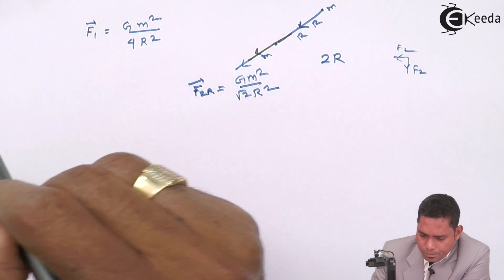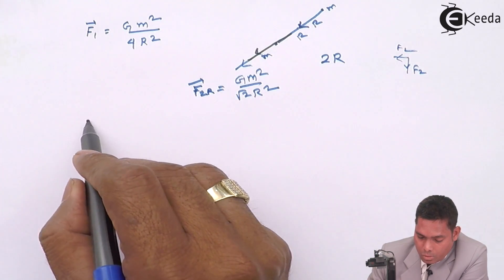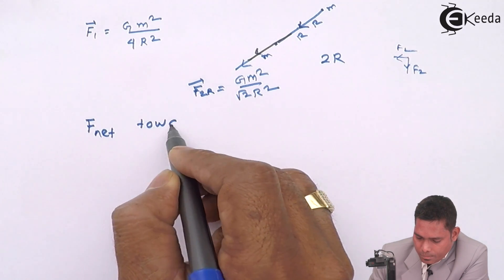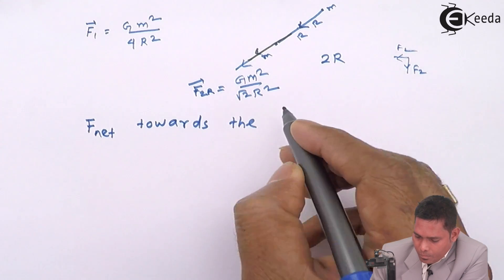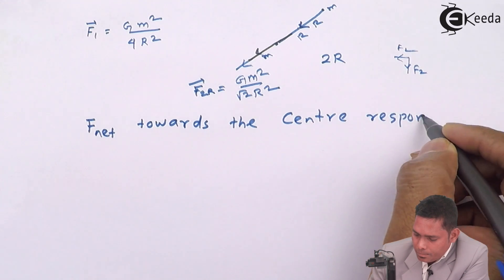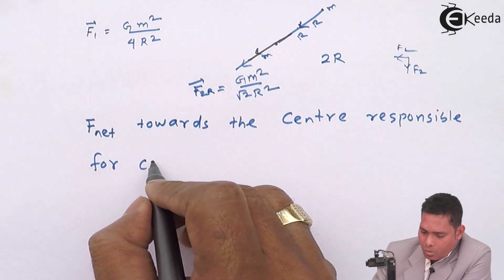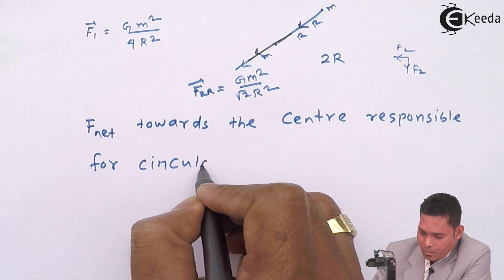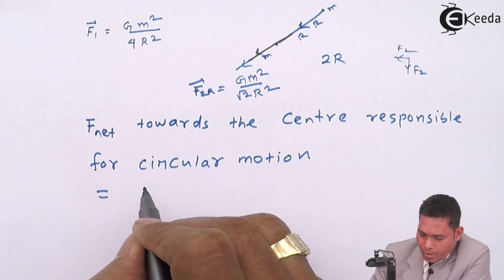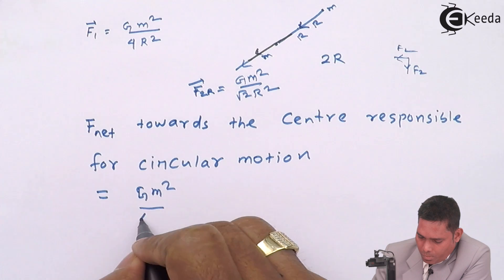Now we need to find F1, the force due to the diametrically opposite mass. The distance between the particle and the opposite mass is R + R = 2R. Since it is a central force acting along the line, F1 = GM²/(2R)² = GM²/(4R²).